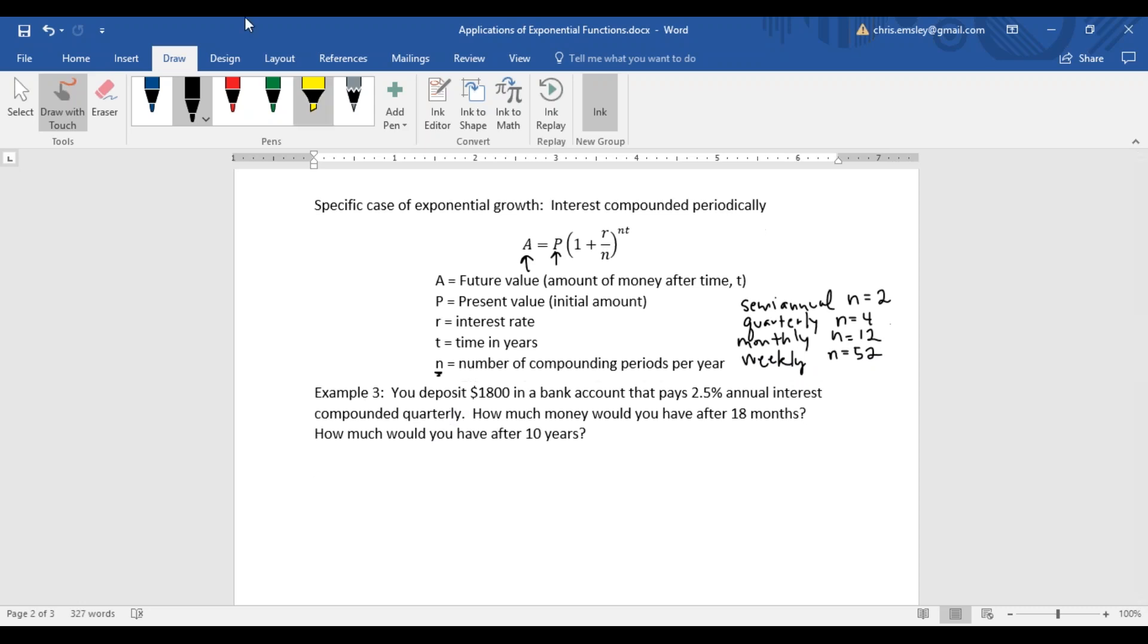In this problem, you deposit $1,800 in a bank account that pays 2.5% annual interest compounded quarterly. First identify our variables - P, the amount we started with is 1,800. Our interest rate is 2.5% or we're going to use 0.025, change it to the decimal.